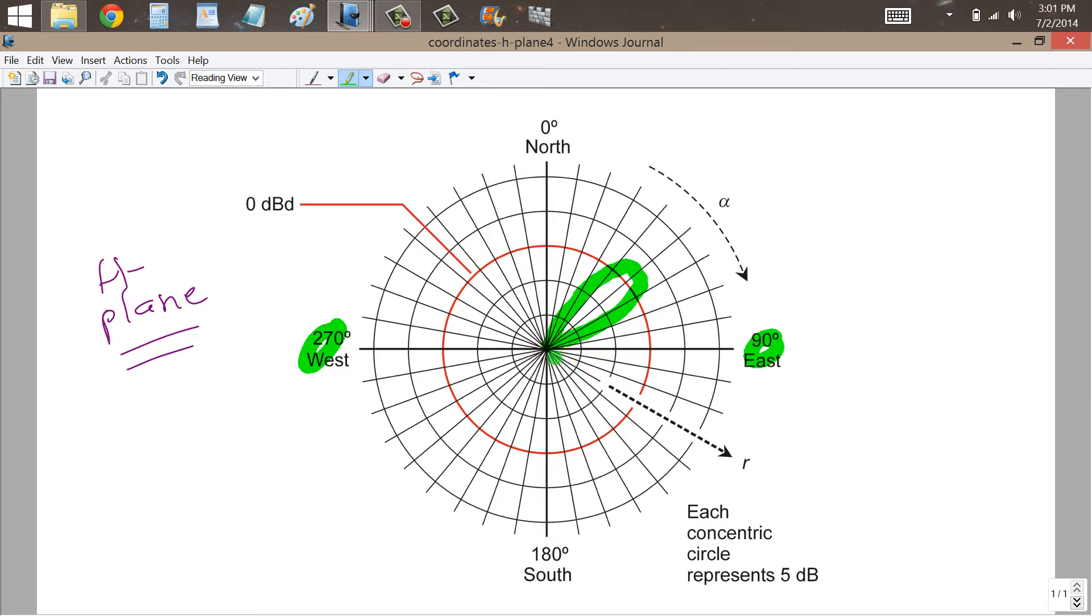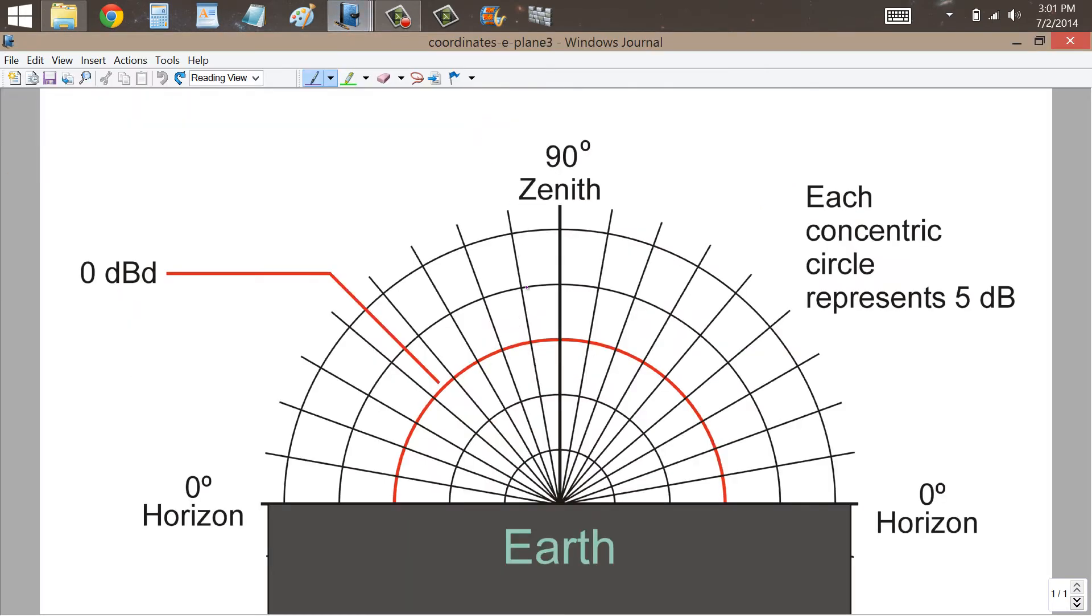But actually, if this were in free space, these would be cones going all the way around the wire axis.